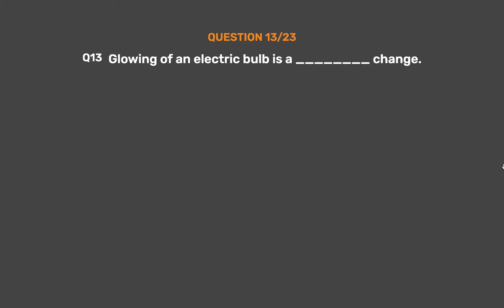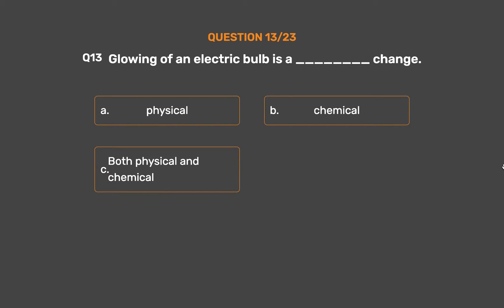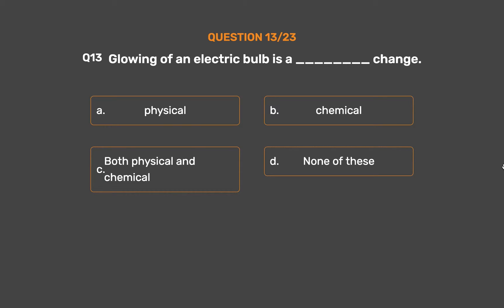Question number 13. Glowing of an electric bulb is a __ change. Option A: Physical. Option B: Chemical. Option C: Both physical and chemical. Option D: None of these.